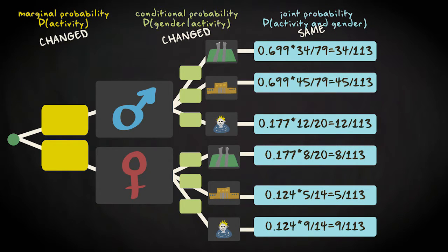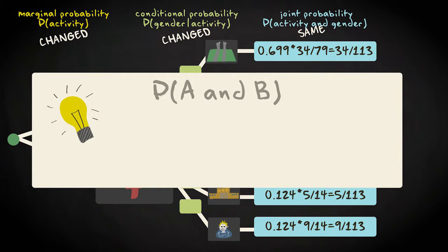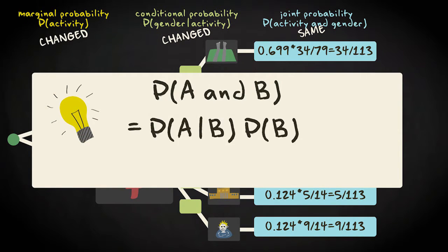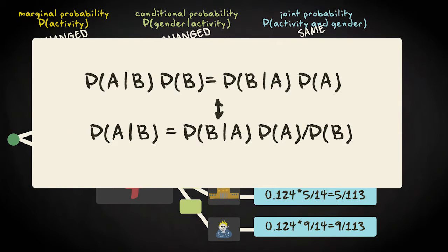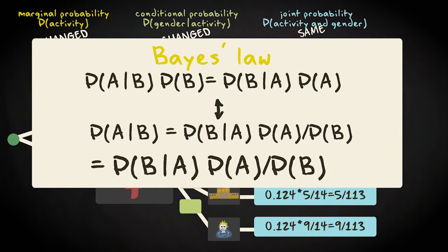This leads to an interesting insight. The joint probability of A and B equals the multiplication of the conditional probability of event A given B times the probability of B. Therefore, we can just as well say that the conditional probability of A given B is related to B given A. This equation is known as Bayes' law.